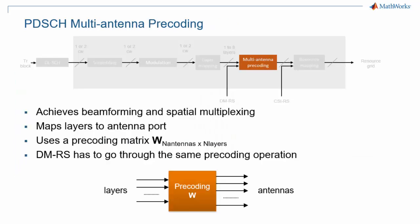After one or two codewords are mapped to between one and eight layers, the layers undergo precoding, which interestingly is not specified in the standard for downlink. Precoding is the operation that maps the layers to as many or more antenna ports using a matrix multiplication with the precoder. A special case of precoding is mapping one layer to multiple antennas, which enables beamforming, likely targeting a particular direction for line-of-sight transmission. Another case is mapping several layers to multiple antennas, sometimes referred to as spatial multiplexing.